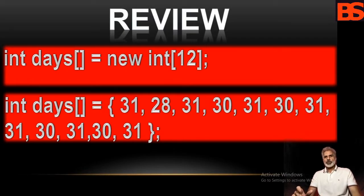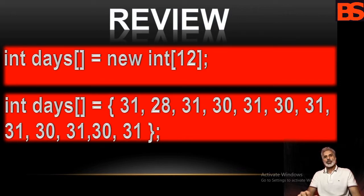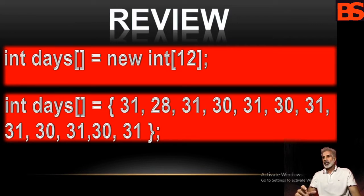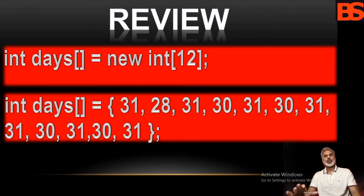It is possible to combine the declaration of the array variable with the allocation of the array itself, as shown on screen: int days[] = new int[12]. Alternatively, you can use an array initializer: int days[] = { comma-separated values }. Arrays can be initialized when they are declared — the comma-separated values become the array elements. The array will automatically be created large enough to hold the number of elements you specify in the array initializer, so there is no need to use 'new'.